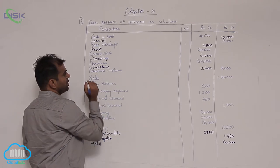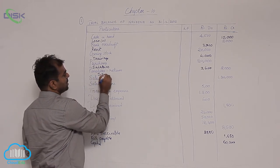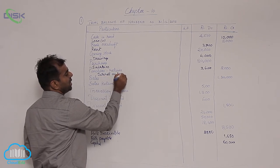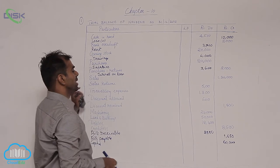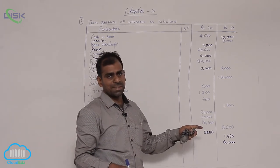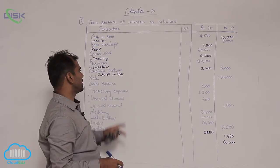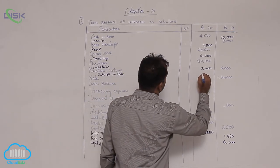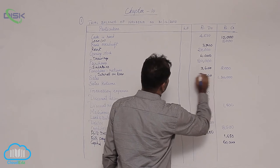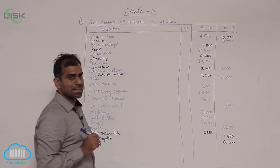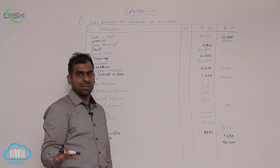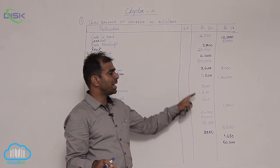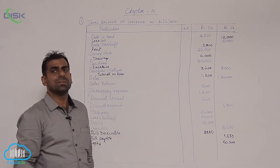Interest on loan is what you pay every year, or month, or quarterly, because you pay for the service of the loan that a person has given you. It is a service charge. That is why it is a nominal account. Since you pay interest on the loan taken, it becomes an expense. So till here, we have put all the amounts in the concerned balance column. Now we will close it.